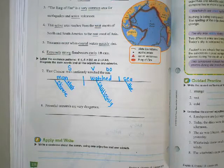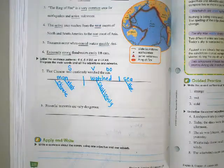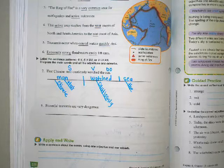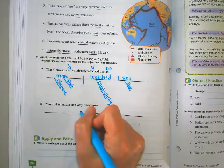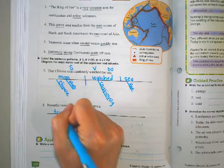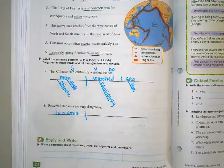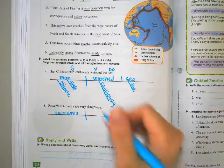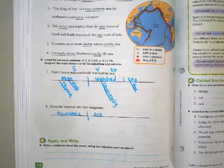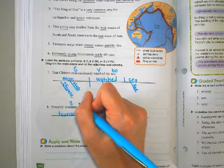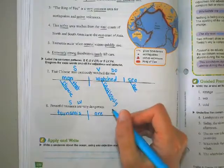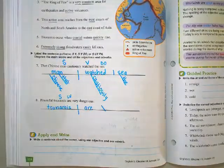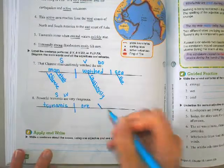Now number eight is a little different. It says, powerful tsunamis are very dangerous. So what is that whole sentence about? It's about tsunamis. So we're going to draw our line and fill us in. Tsunamis. What is the action word? It's are, which is actually a linking verb. So this is our subject. This is our linking verb. And then what are they? They're dangerous. Dangerous is a describing word. So that is a predicate adjective. So that's why our line is a little bit slanted like that.